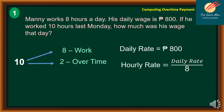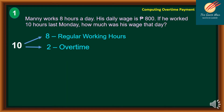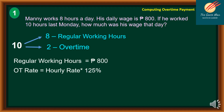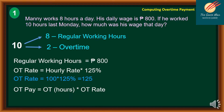The daily rate is 800 pesos. To find the hourly rate, we divide the daily rate by 8, since one work day equals 8 hours. So the hourly rate is 100 pesos per hour. The regular working hours pay is 800 pesos. The overtime rate equals hourly rate × 125%, so: OT rate = 100 × 125% = 125 pesos. The overtime payment equals the number of OT hours times the OT rate.